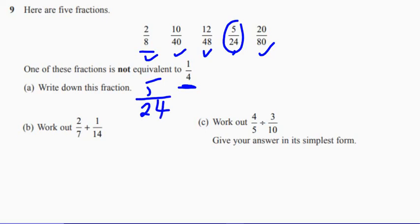Part B. Work out 2 7ths plus 1 14th. Now I need to make sure that the denominators are the same. So 2 7ths is the same as 4 14ths. Add 1 14th equals 5 14ths.